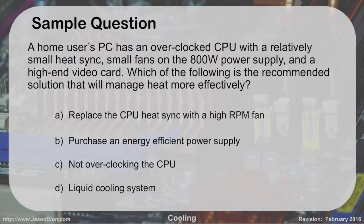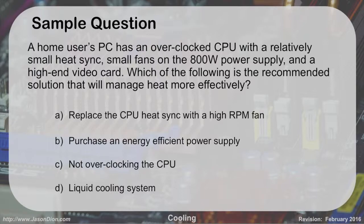Scenario: a home user PC with an overclocked CPU, a relatively small heat sink and small fans, an 800-watt power supply, and a high-end video card. That sounds like lots of heat — the 800-watt power supply generates a ton, the overclocked CPU generates a ton, and the high-end video card generates a ton. What should you recommend to manage the heat more efficiently? Should you replace the CPU heat sink with a high-RPM fan? Purchase an energy-efficient power supply? Not overclock the CPU? Or use a liquid-cooled system? The answer is D — the best way to give this system efficiency is a liquid-cooled system.